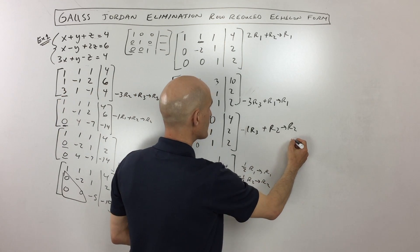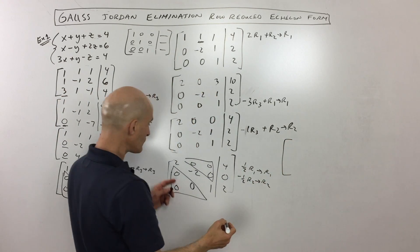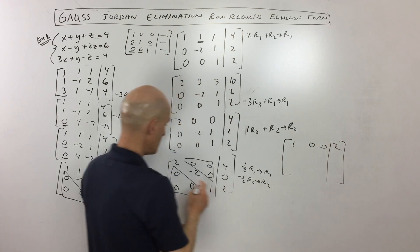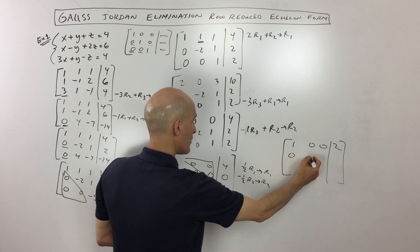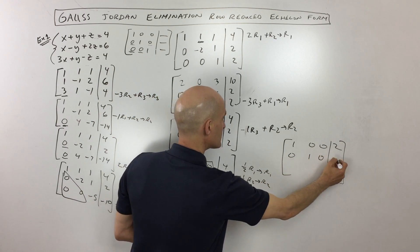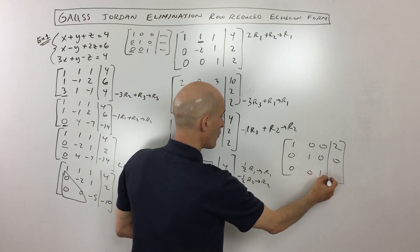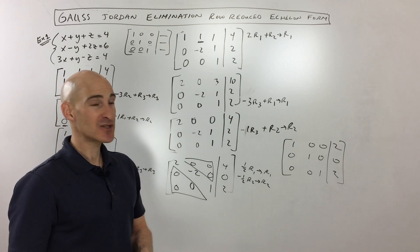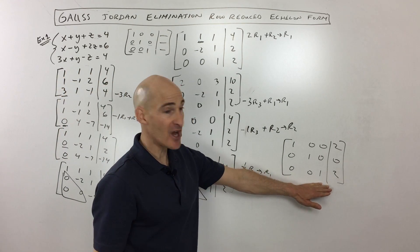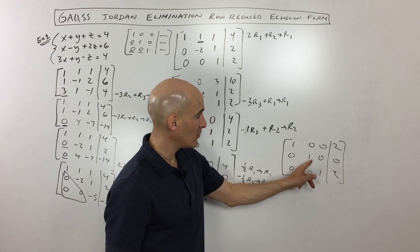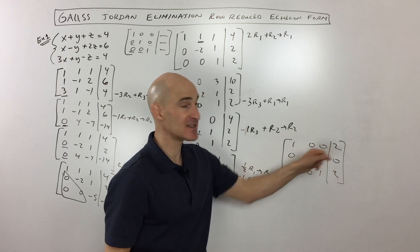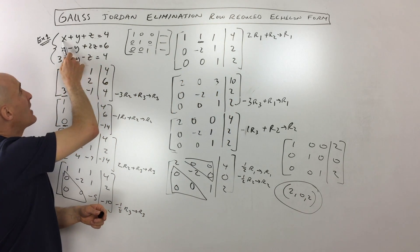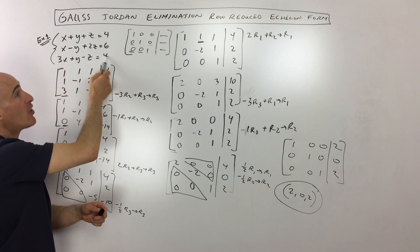So doing that, we get 1, 0, 0, and 2. Then 0, 1, 0, and 0. And 0, 0, 1, and 2. Now it seemed like it took a lot more work than Gaussian elimination with back substitution, but now you're done — you can see that z is equal to 2, y is equal to 0, and x is equal to 2. So our answer is 2, 0, 2. If you want to check your answer, just put those values back in for x, y, and z and make sure they satisfy all the equations.